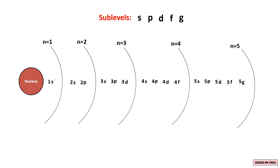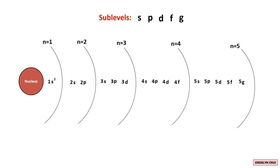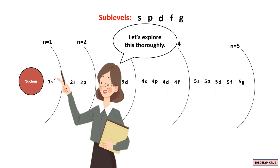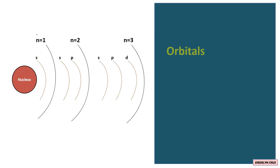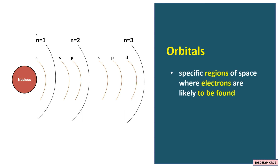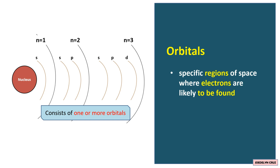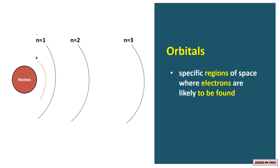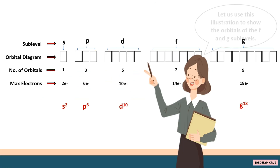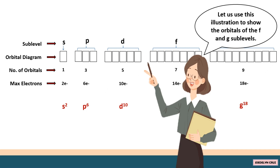Now, let's discuss the superscripts associated with each sublevel. These indicate the number of electrons within that specific sublevel. For instance, in the S sublevel, there are two electrons. Sublevels contain orbitals — specific regions of space where electrons are likely to be found. Each sublevel consists of one or more orbitals. For the S sublevel, there is one orbital. For the P sublevel, there are three orbitals. For the D sublevel, there are five orbitals.